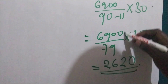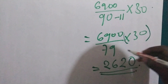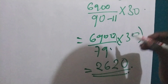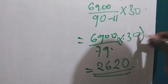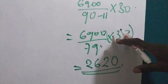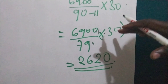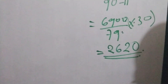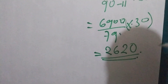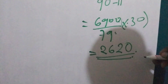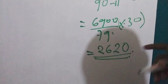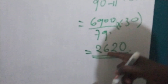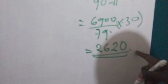If we calculate only the division, we get consumption per day. Then if we multiply by 30, it brings us to one month. So our average monthly consumption is 2620.